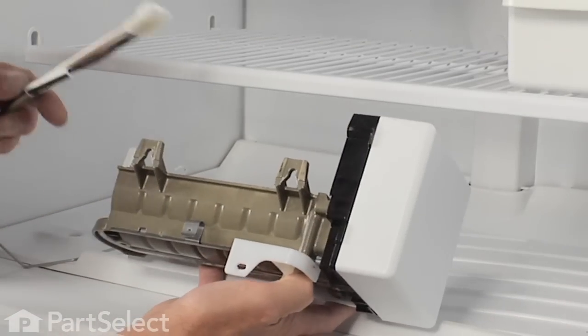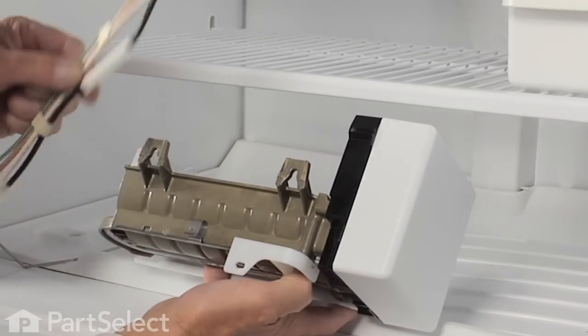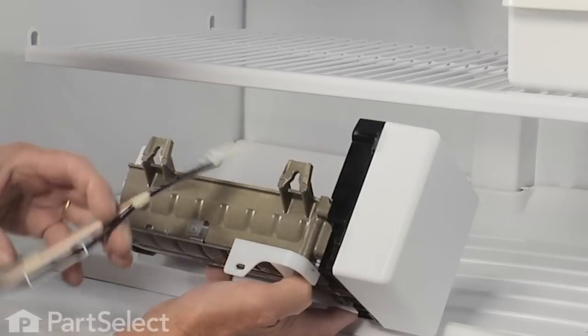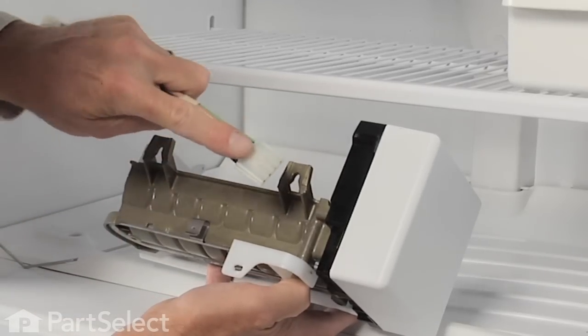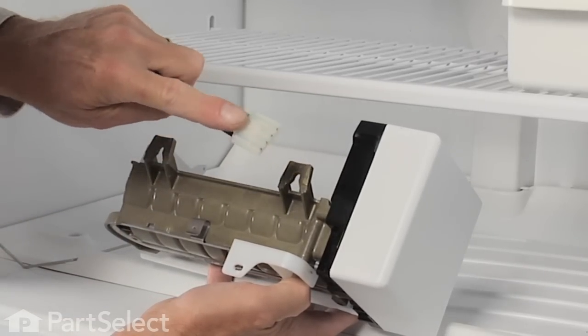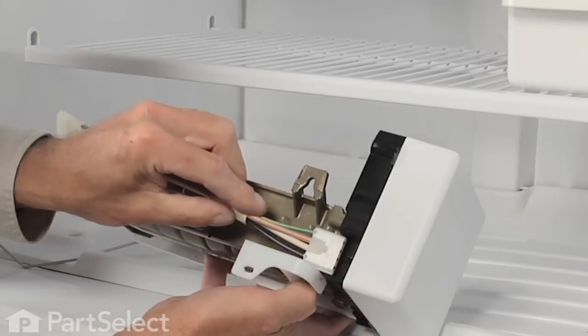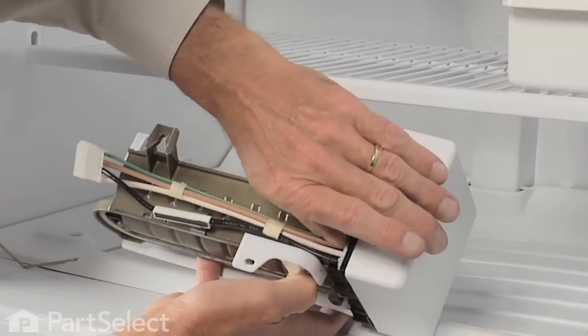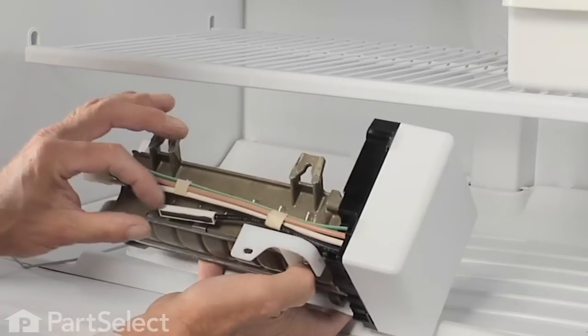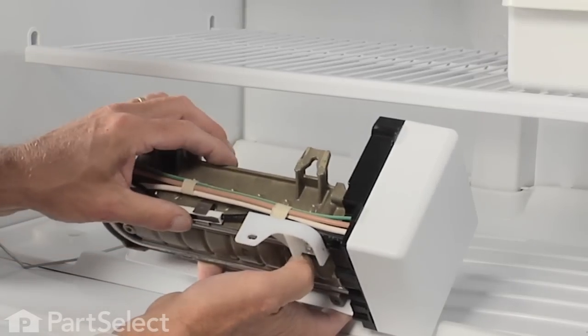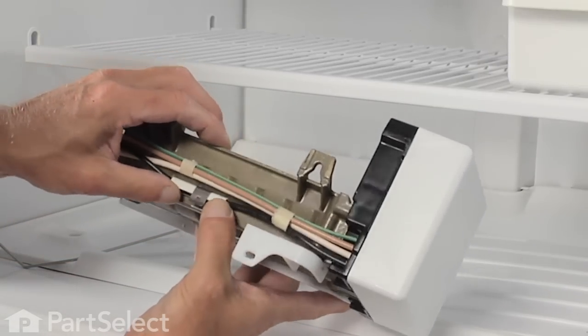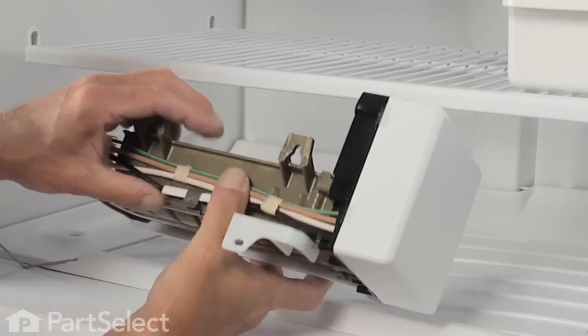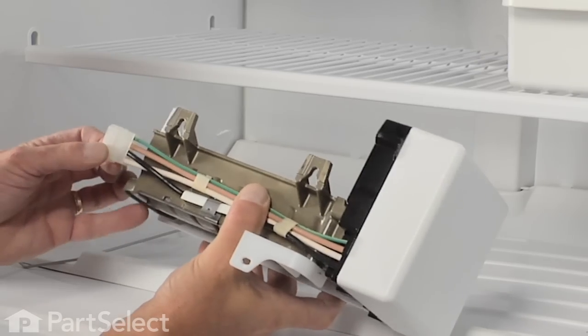Next step will be to install the proper wire harness onto the ice maker. Make sure the locking tab is pointing out, snap it into place. Install that in the clip and the harness is ready to connect.